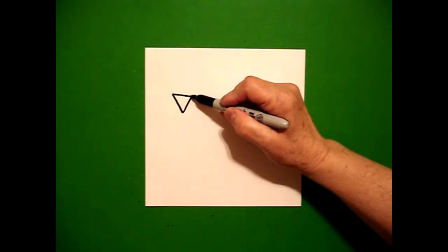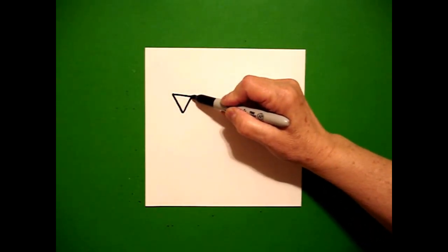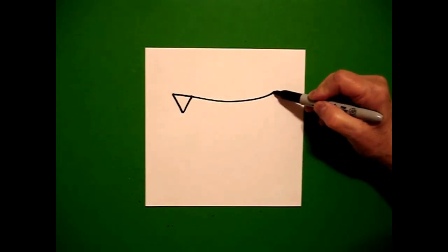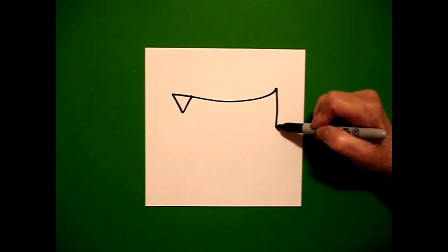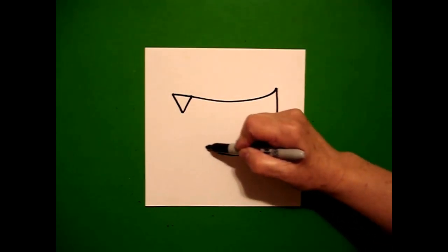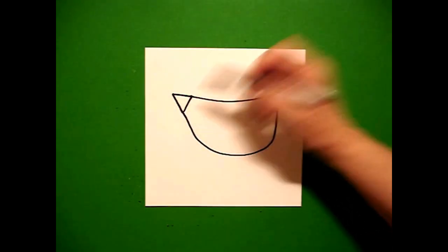Starting at the top, right about here, I'm going to draw a slightly curved line over and up. I'm going to draw a big curved line down, over, and connect.